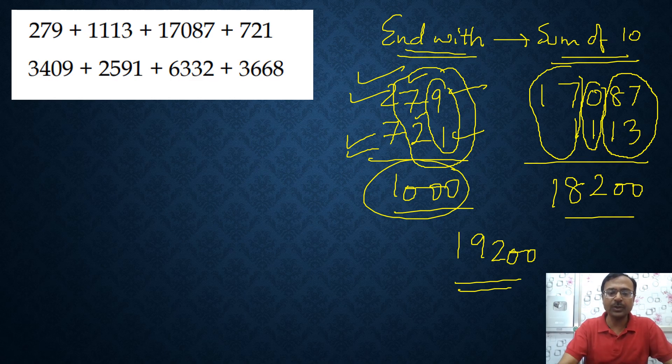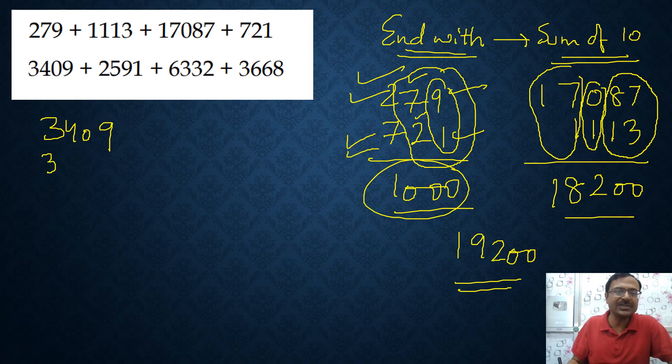I am sure you are going to enjoy these videos. These are all methods which make you smarter, methods through which you can save time in competitive exams and you handle numbers very smartly. Let's see another one in which there are four digit numbers. Look at this 3409 and the second one ends with 1, this is 2591.